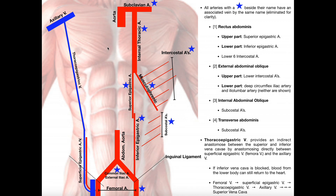There is another anastomosis that we'll talk about in a separate video. Now let's talk about the blood supply to these muscles. We have four major muscles of the anterior abdominal wall: the rectus abdominis, the external abdominal oblique, the internal abdominal oblique, and the transverse abdominis. The rectus abdominis blood supply depends on where you are: the upper part is supplied by the superior epigastric artery, the lower part is supplied by the inferior epigastric artery, and some of the lateral parts are also supplied by some of these lower intercostal arteries, which arise from the musculophrenic artery.